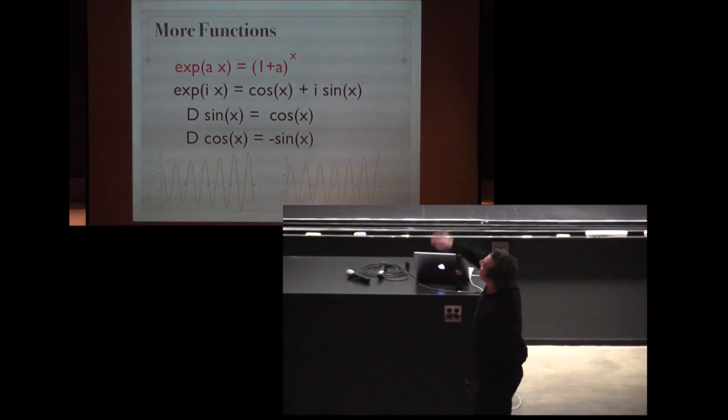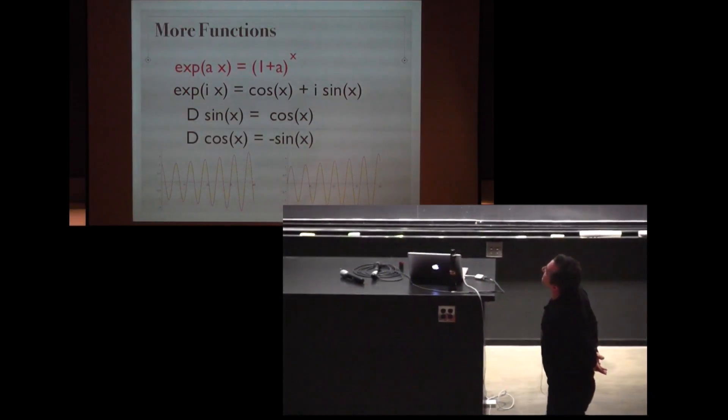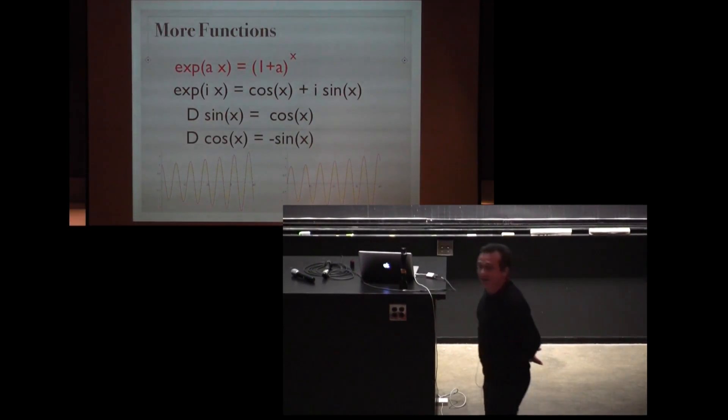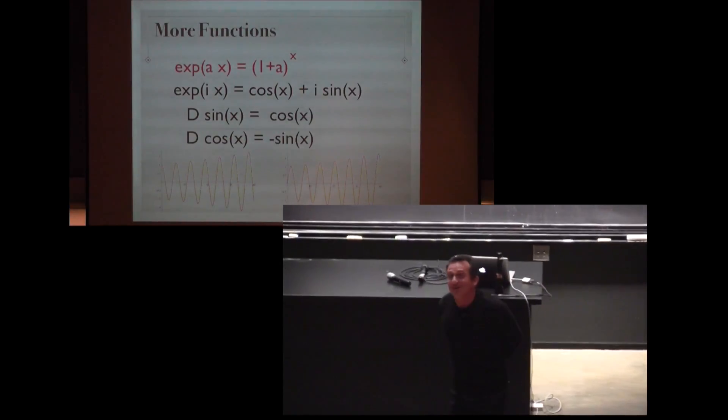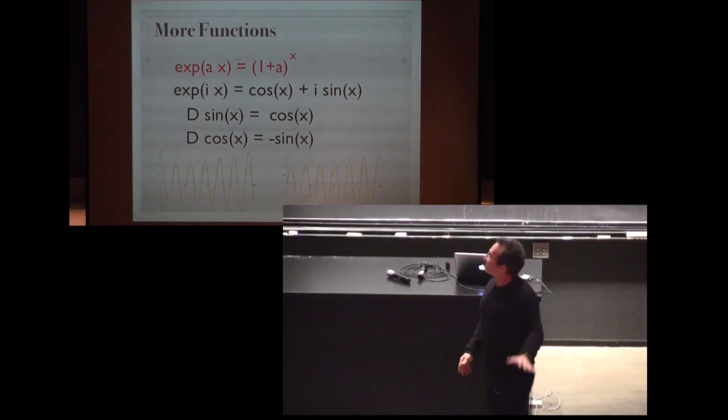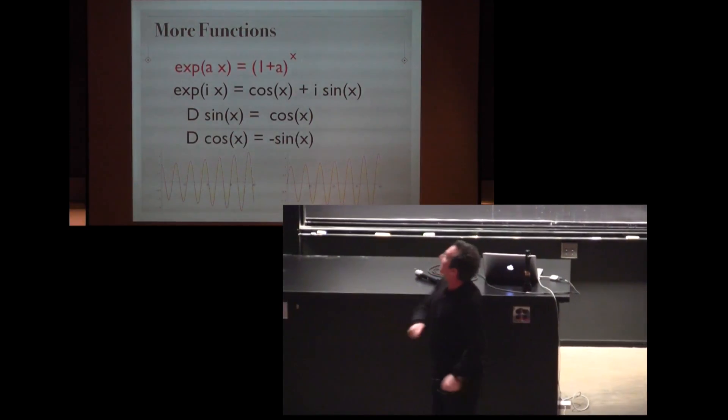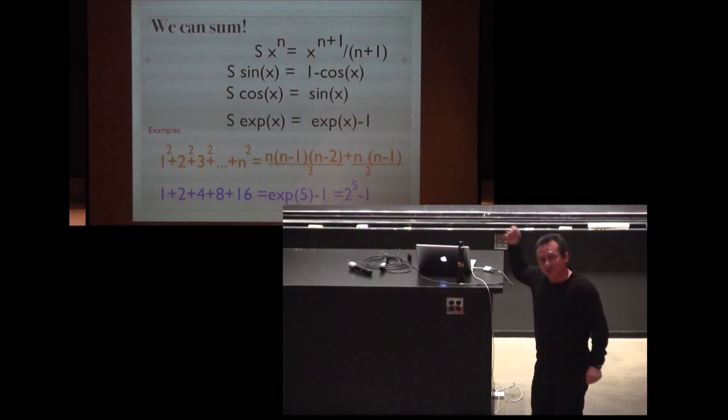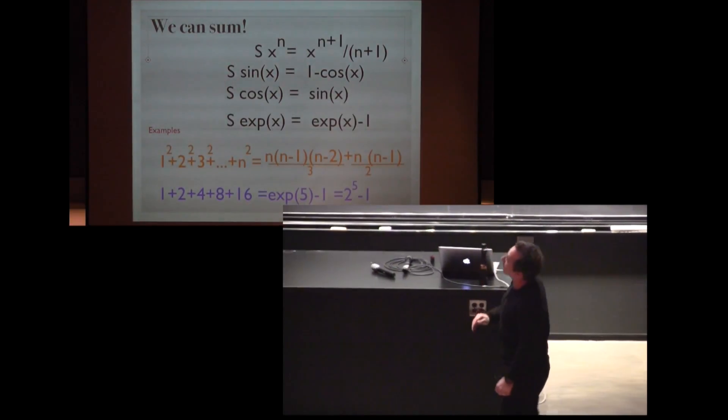We can even get more functions like we have already seen the exponential function. If you take an imaginary interest rate, we get the real and imaginary part. We get the cosine and sine. That's the definition. And immediately we get the result that derivative of sine is cosine and derivative of the cosine is sine. These are the formed functions.